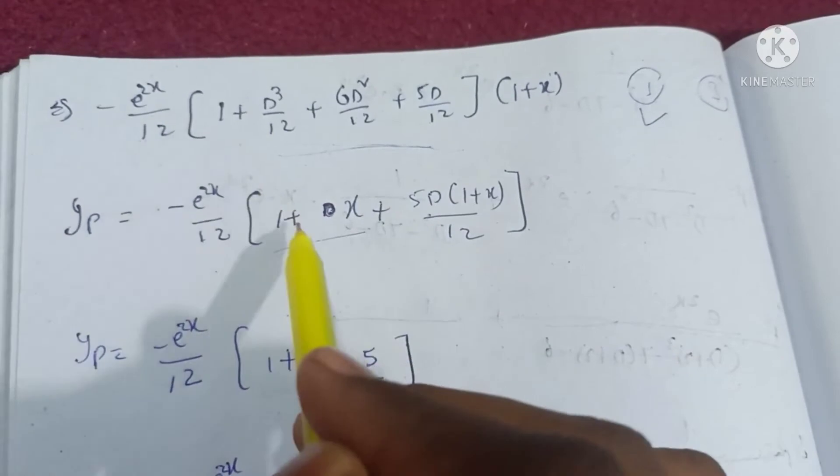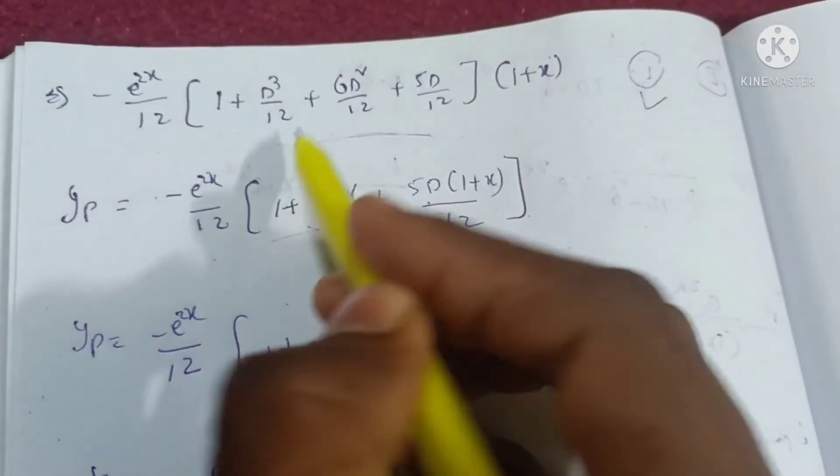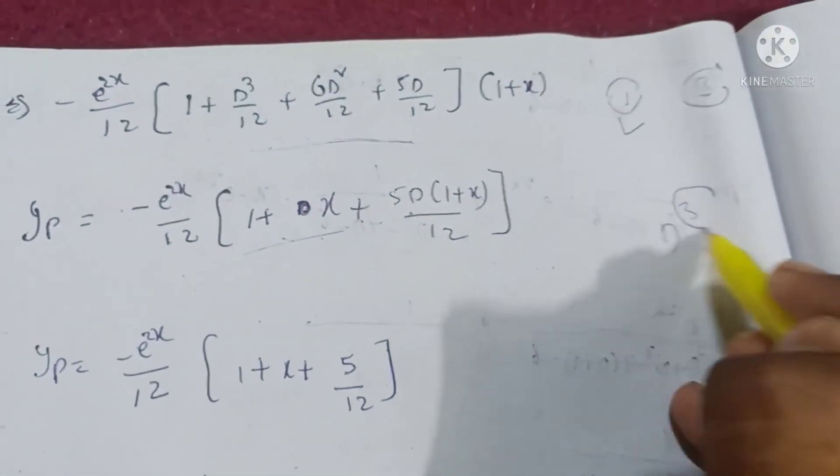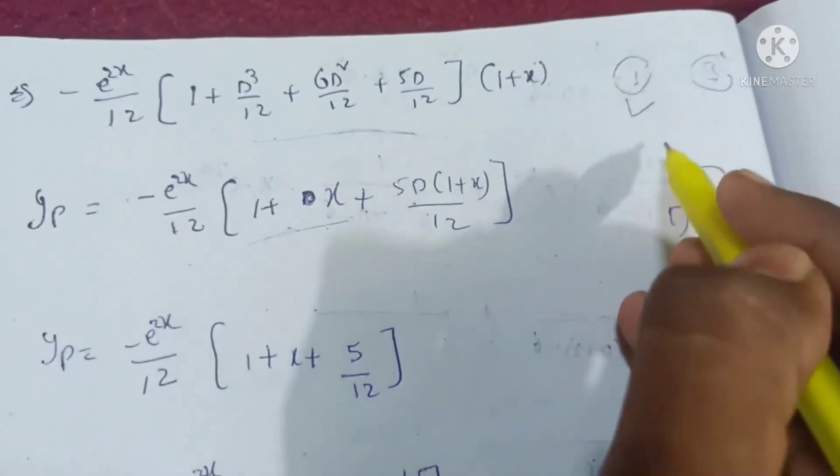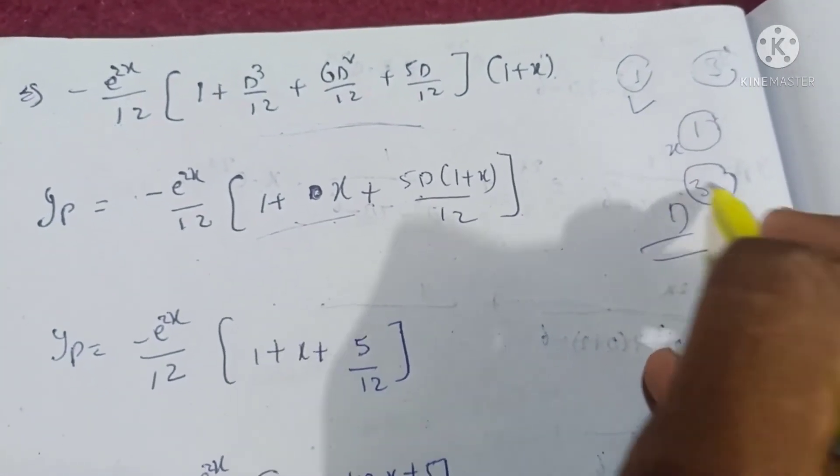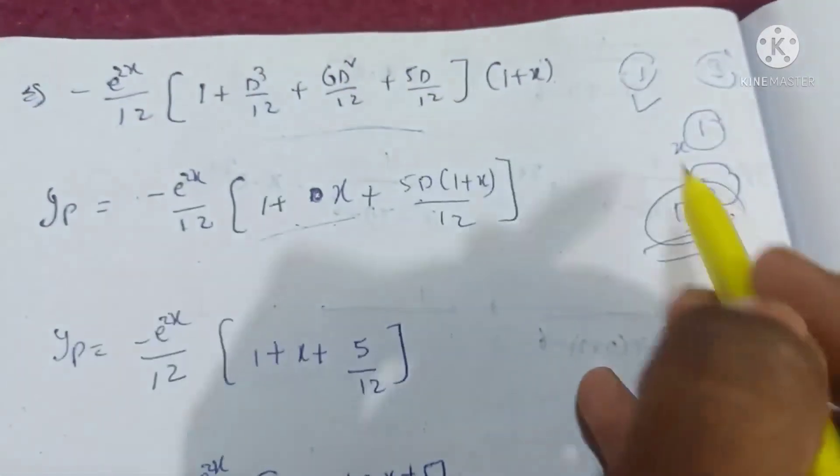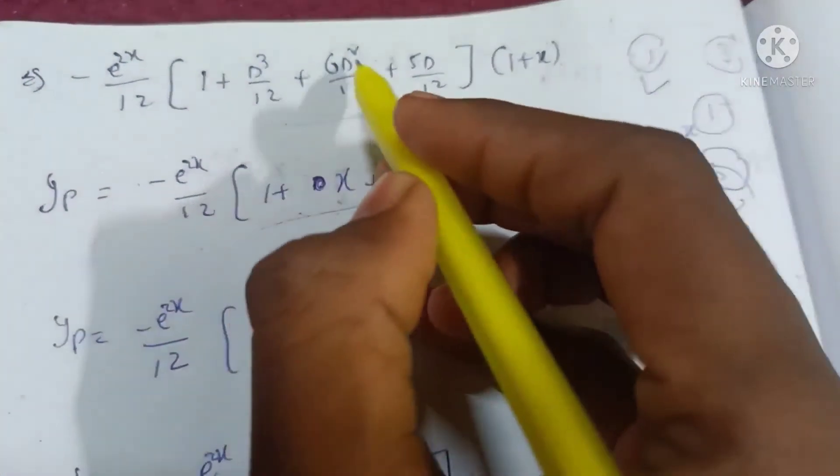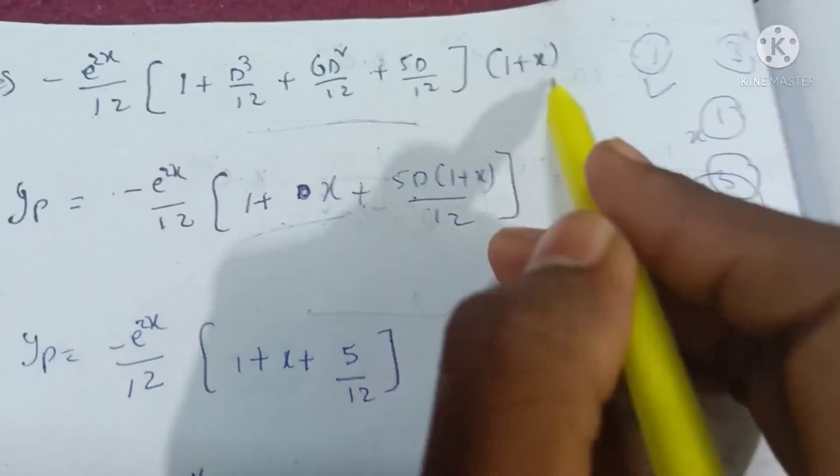Now -e^(2x)/12 × [1 + (1 + x) + (D³ + 6D²)/12 + 5D/12] into (1 + x). For D³ by 12: the power is 3, so for x the power is 0. D³ is 0, D² is 0.